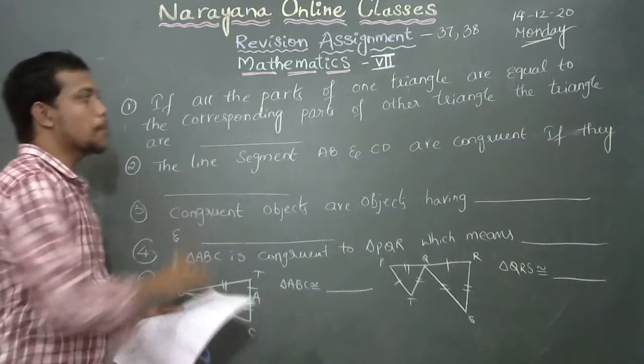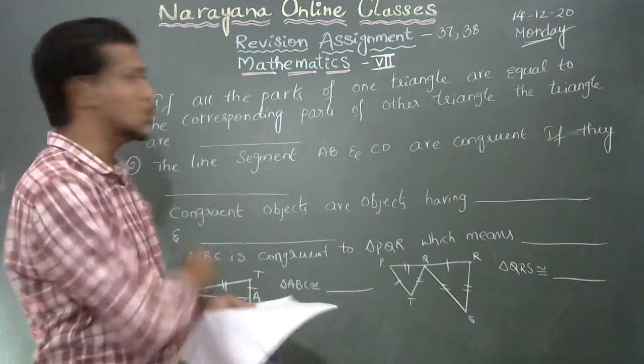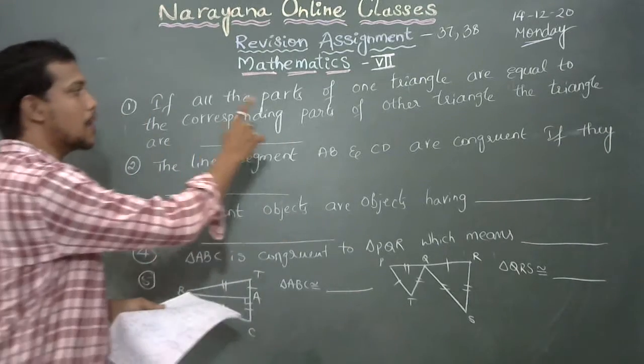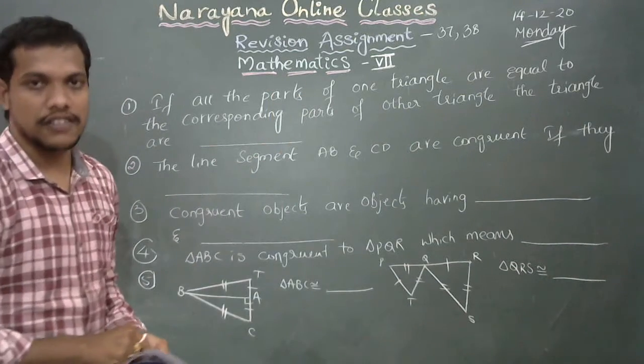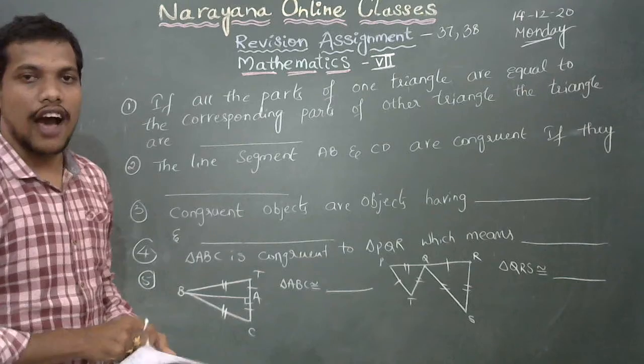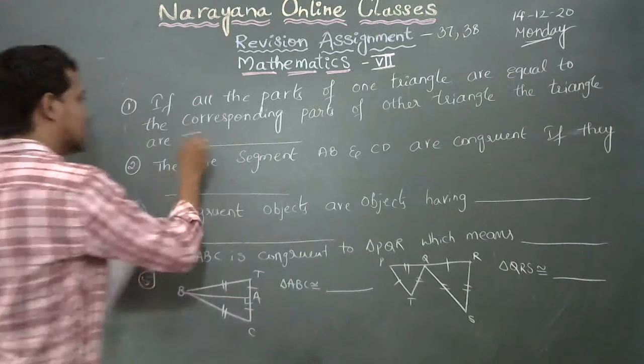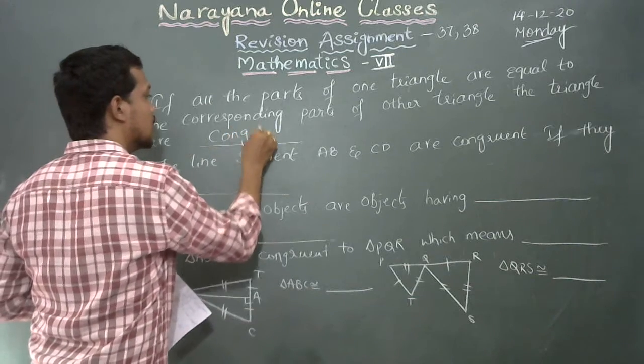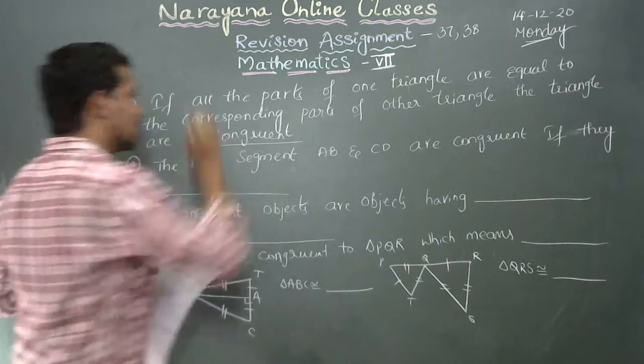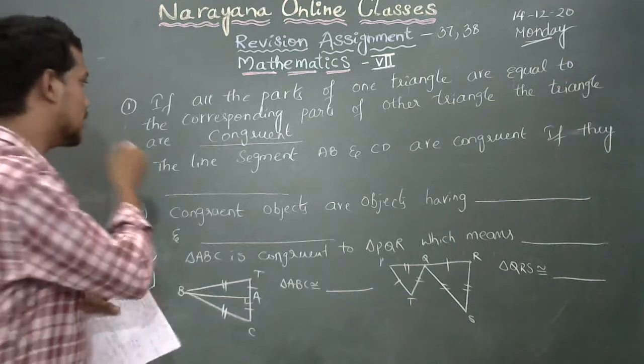If all the parts of one triangle are equal to the corresponding parts of other triangle, then the triangles are congruent. So the answer is congruent.